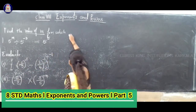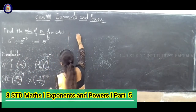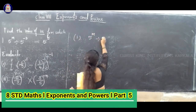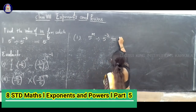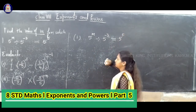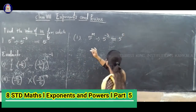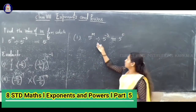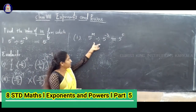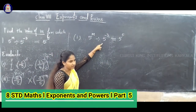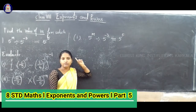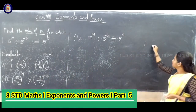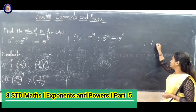Now, can you find the value of n directly? The question is in the form where on the left-hand side we have 5 and 5 — the same base. So, if you know the law of exponents, you must learn the law of exponents before solving all these sums.